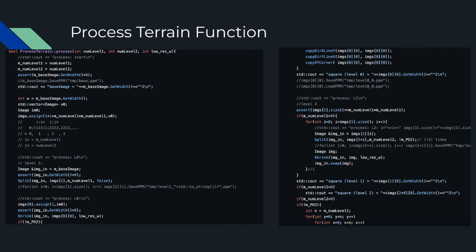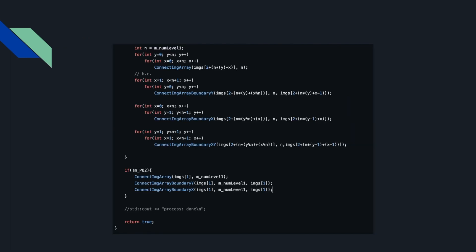I left in comments my thought process for how to approach it, and I also left my print statements because those really helped me debug. I took great use of assert statements to always check for values. Essentially, I create an empty vector of image objects VO and an image object IMO. Then I assign space in the image vectors and store images based on the values — either level 1 or level 2. Then I split that base image into smaller images and store them in arrays, and finally connect the images and check the boundaries in the later process, as the code describes.